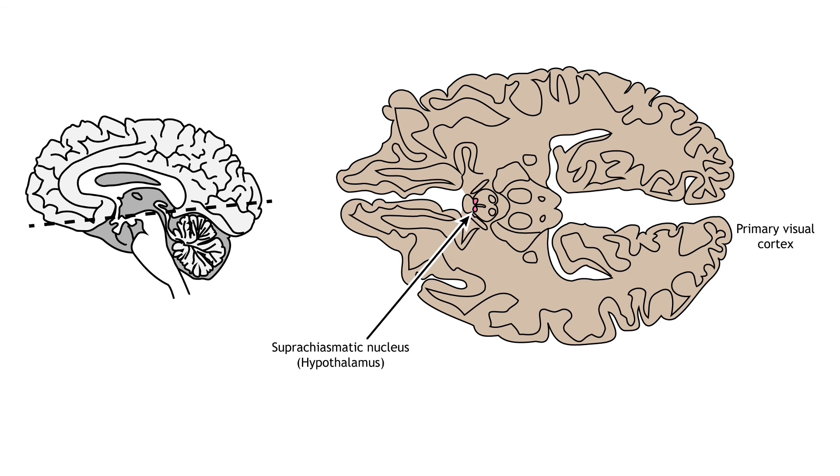Other retinal neurons send axons to the pretectum, a midbrain region that communicates with motor nuclei and is responsible for pupillary control.